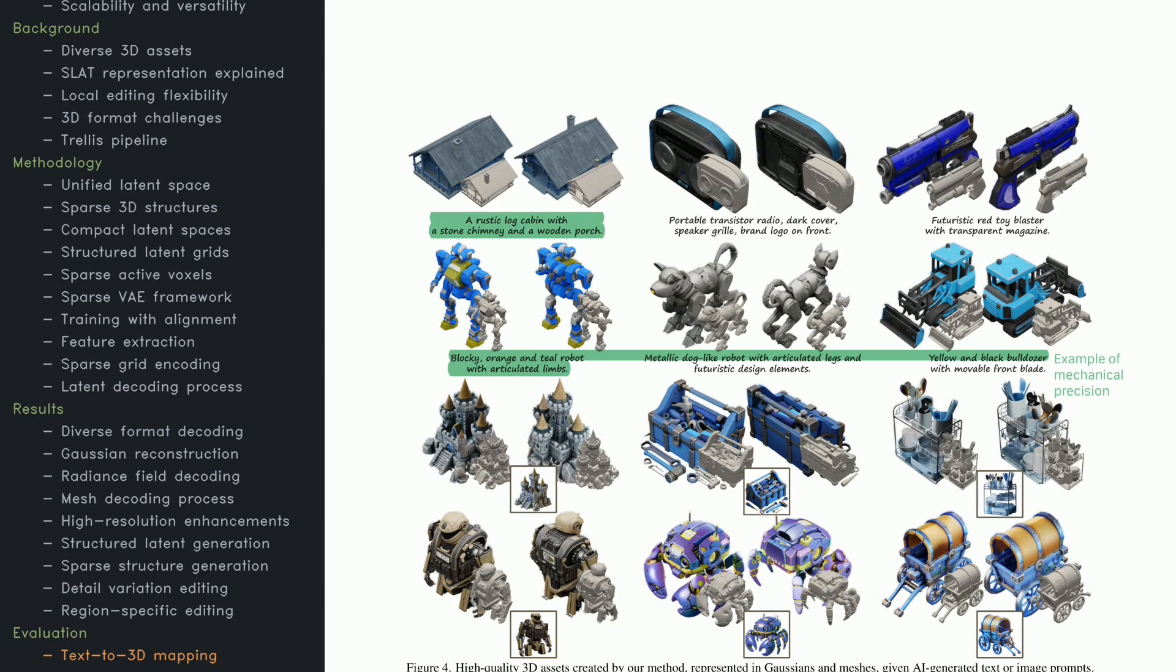Here you can see visual examples of the 3D assets generated by the model. Notice the rustic log cabin, the futuristic toy blaster, and the detailed bulldozer designs. Check out how the textures vary in each object. There's a medieval castle with fine tower details, plus kitchenware sets that clearly show different materials. Each example demonstrates how well the system translates either text prompts or reference images into 3D shapes, with strong geometric and aesthetic fidelity.